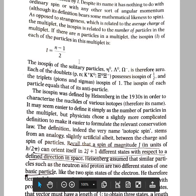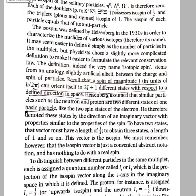In 1930, Heisenberg defined isospin in order to characterize the nuclei of various isotopes. From the name 'isotope', isospin got the name 'isotopic spin'. This isotopic spin is used to find out the number of particles present in a multiplet.